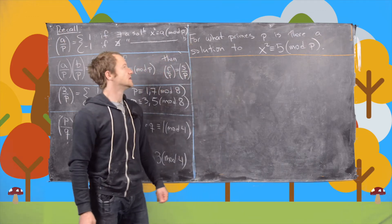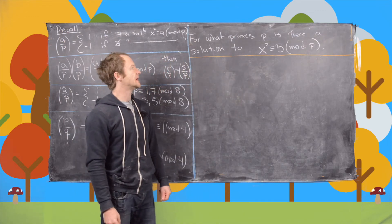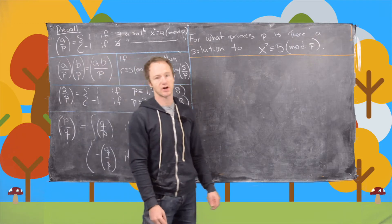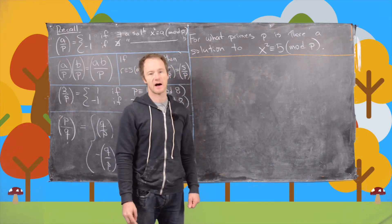In this video we're going to answer this question. For what primes p is there a solution to this quadratic congruence x squared is congruent to 5 mod p?